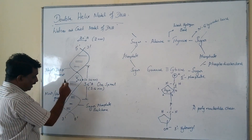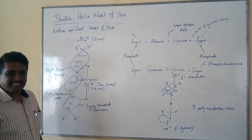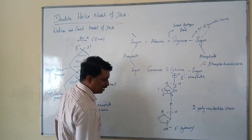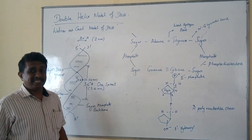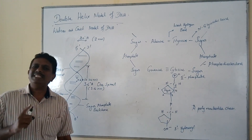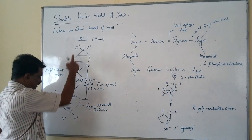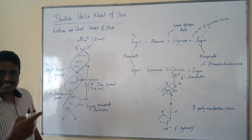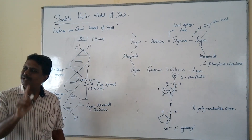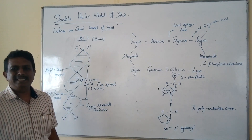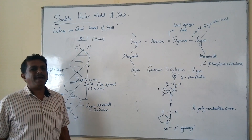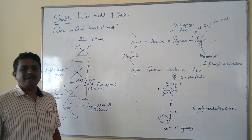Toward the other distant end, you can find the presence of the 3' end. In the 3' end of the pentose sugar derivative, you can find the presence of a hydroxyl group. One strand runs in the 5' to 3' manner, and the other strand runs in the 3' to 5' manner. Because of this unique feature, the DNA is helically twisted and runs in an antiparallel manner.